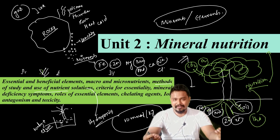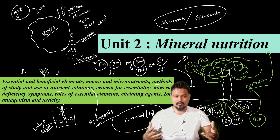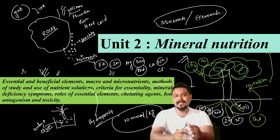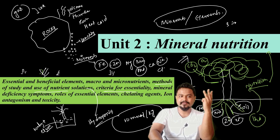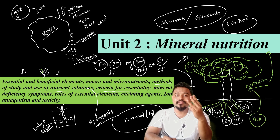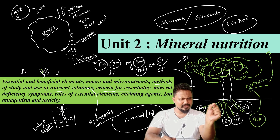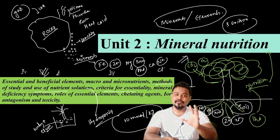So, using these methods, we study essential and non-essential elements. Next is the Criteria of Essentiality. An element is considered essential if it meets three specific criteria. If it does not meet all three criteria, it is not essential.